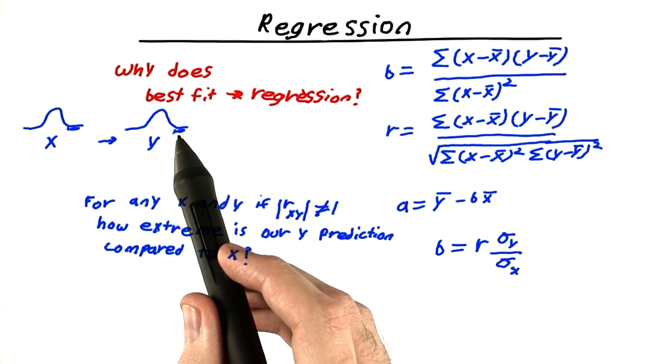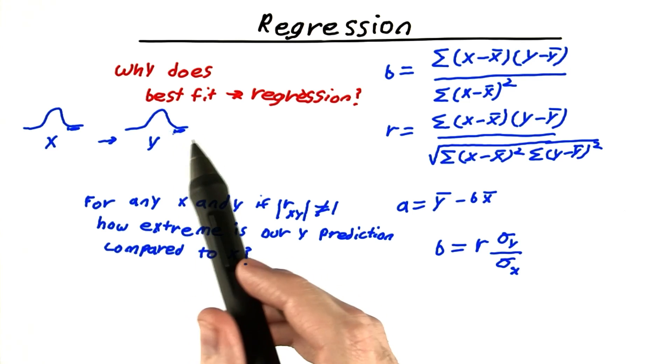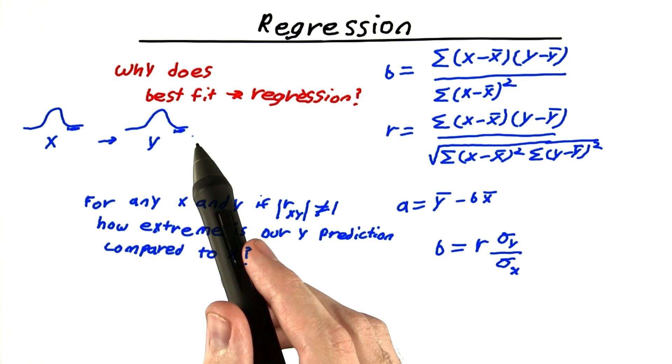And it will have, again, some probability of being that value or more extreme. And the smallness of that probability is what we mean by extremity.